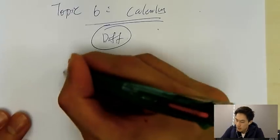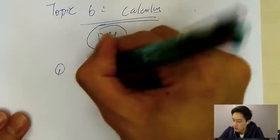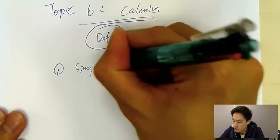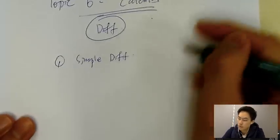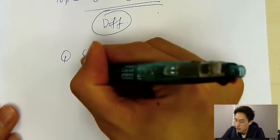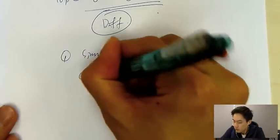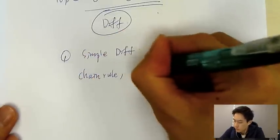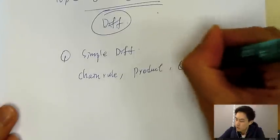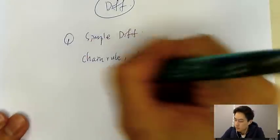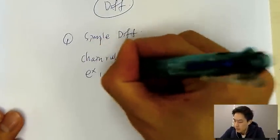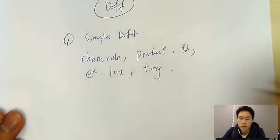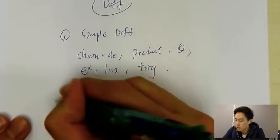The first type is simple differentiation. When I say simple differentiation, you need to know how to differentiate by using chain rule, product rule, quotient rule, and also differentiation of EX, LNX, and then trigonometry differentiation. So this is all the simple differentiation you need to know.